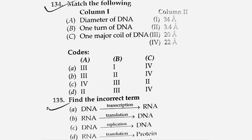Next question: Find the incorrect term. DNA converts to RNA by transcription — correct. RNA as protein is translation — correct. DNA duplication is replication — correct. But the option that RNA converts to DNA by translation is incorrect — RNA to DNA is reverse transcription, not translation. Option number B is the incorrect term answer.